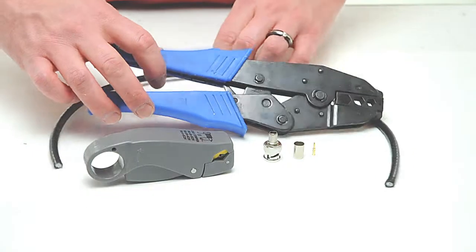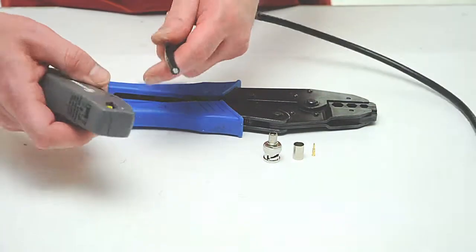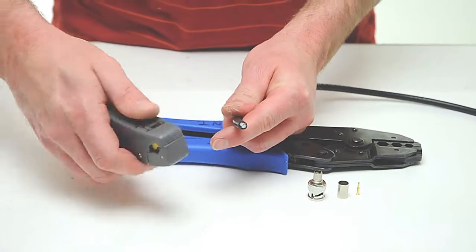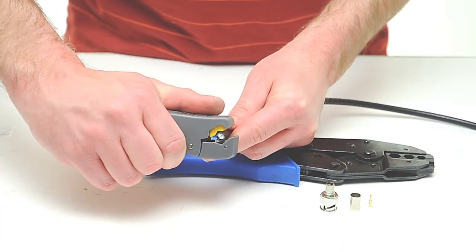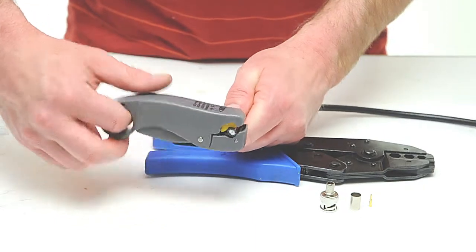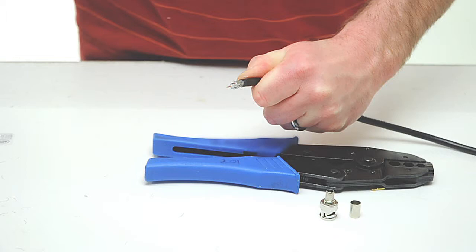To begin, take your coax stripper and remove the outer jacket and dielectric of the cable. The advantage of using a coax stripping tool is that it cuts both the outer jacket and dielectric at the same time. Rotate the tool a few times around the outside of the cable and peel the jacket off.